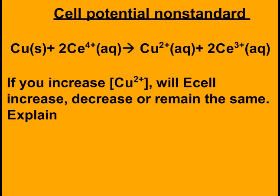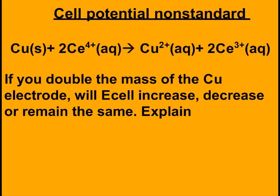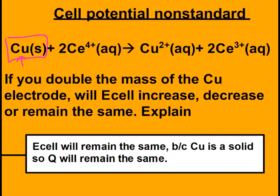Try this one: copper²⁺ concentration is increased. Since Q equals products over reactants, increasing a product makes Q greater than 1. So E cell should decrease. As copper ions increase, Q increases to more than 1 as the reaction gets closer to equilibrium and approaches zero voltage. If the mass of solid copper is doubled, Q remains the same because solids are not included in the Q expression — so E cell also remains the same.